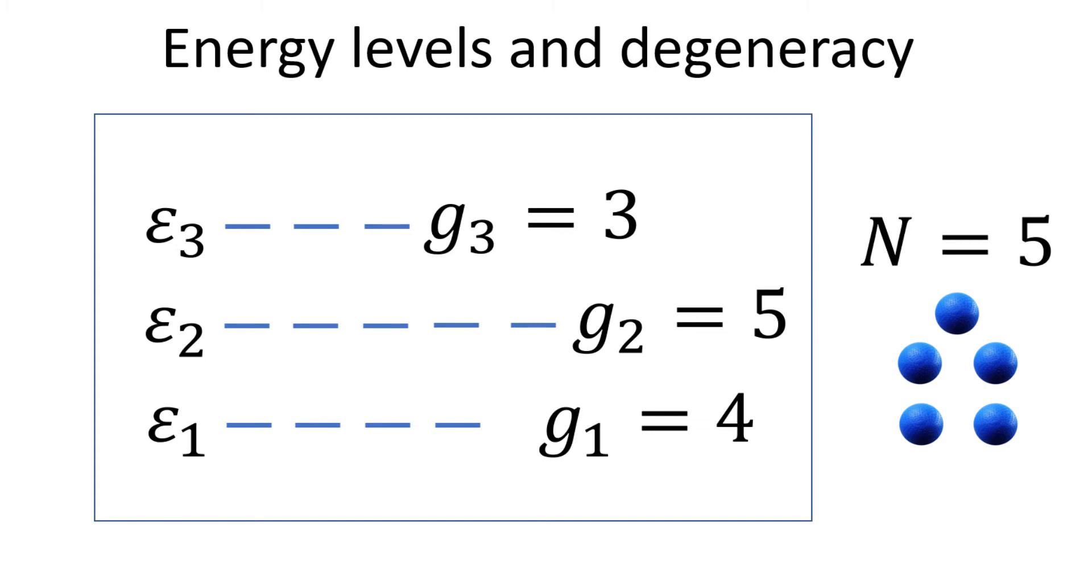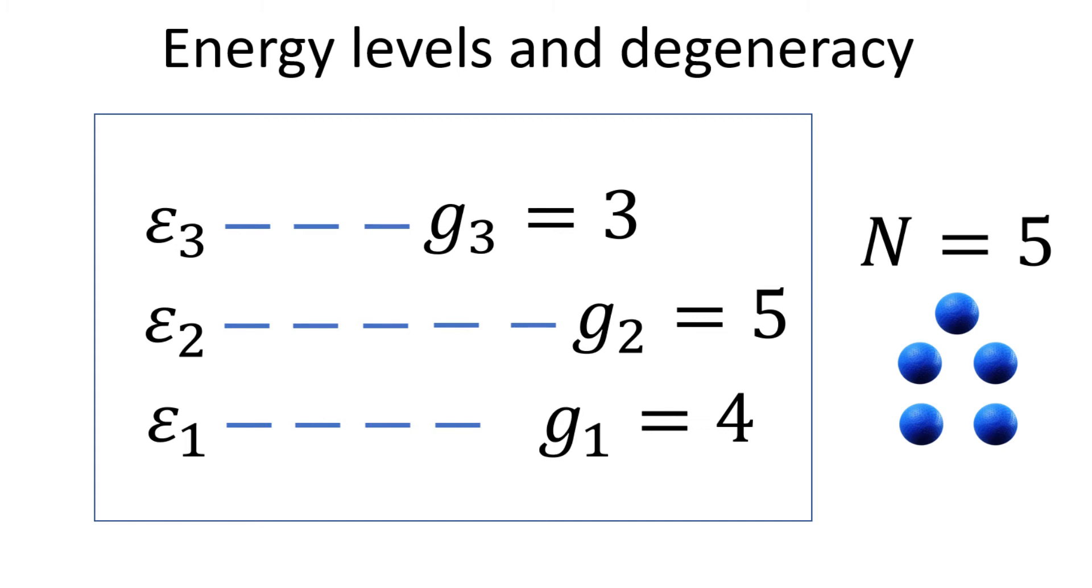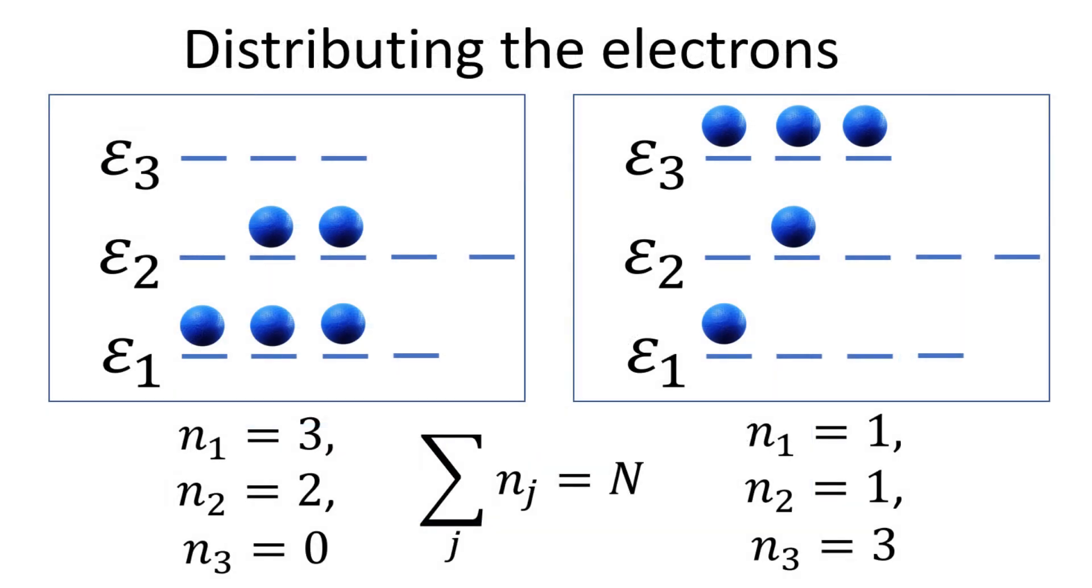Let's consider a system with three energy levels, where each level has a G number of states as indicated, also known as its degeneracy. Let's say we have a total of N equals 5 electrons to distribute. There are of course many ways we can distribute that N equals 5 electrons.